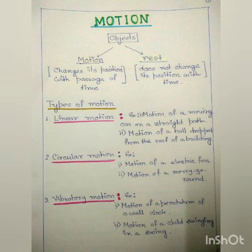What is vibratory motion? If a body moves to and fro about a fixed point, then it is in vibratory motion. Examples are the motion of a pendulum of a wall clock, the motion of a child swinging in a swing, etc.